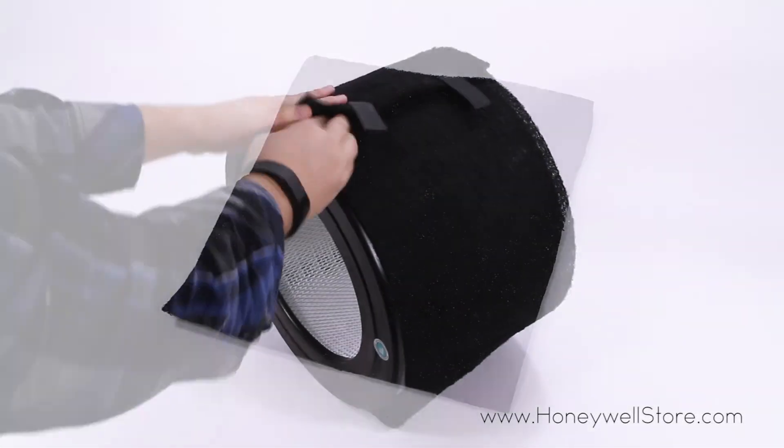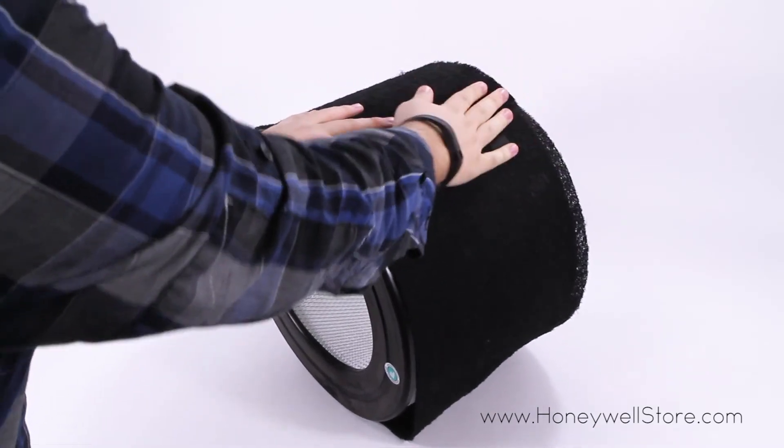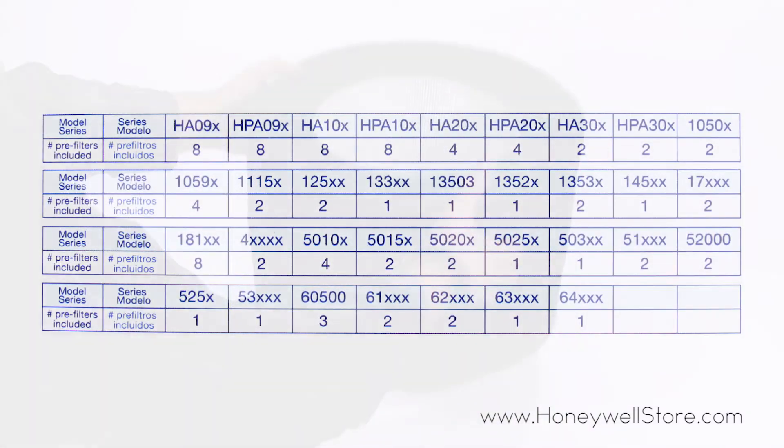For certain models, the velcro straps are used to secure the pre-filter in place. This kit can make one to eight pre-filters for your Honeywell air purifier depending on model.